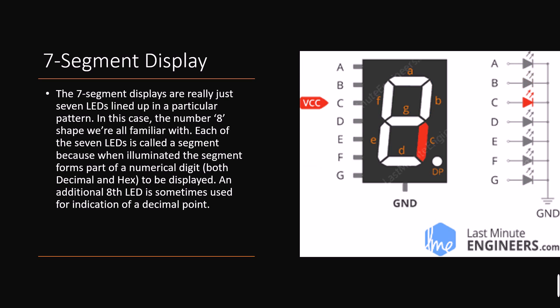The 7-segment displays are really just 7 LEDs lined up in a particular pattern. In this case the number 8 shape which we can see in LED watches, LED stopwatches and different other devices. Every single LED is called a segment because when illuminated the segment forms a part of a numerical digit both in decimal and hexadecimal to be displayed. An additional 8th LED is sometimes used for indication as a decimal point.